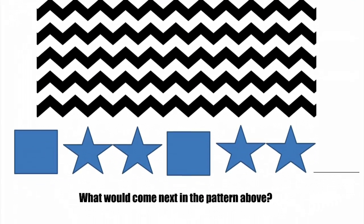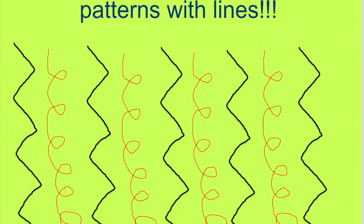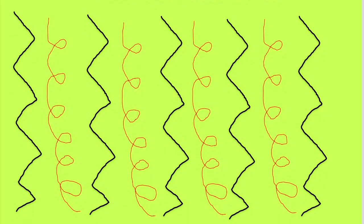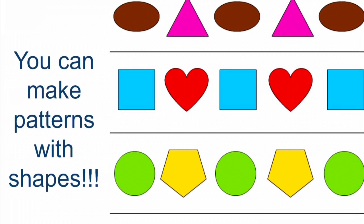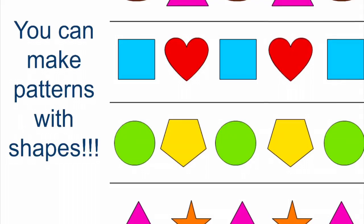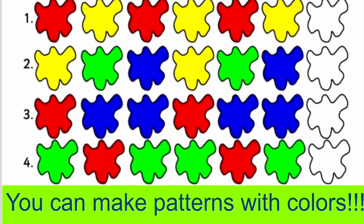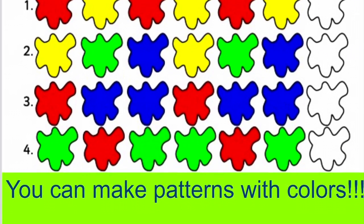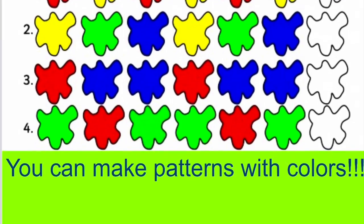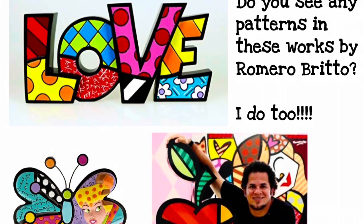What would come next in this pattern? You can make patterns with shapes as well — can you tell what would come next in some of these? And you can also create patterns with color. Romero Britto creates patterns with lines, shapes, and colors in his works. Do you see any patterns in these works by Romero Britto?